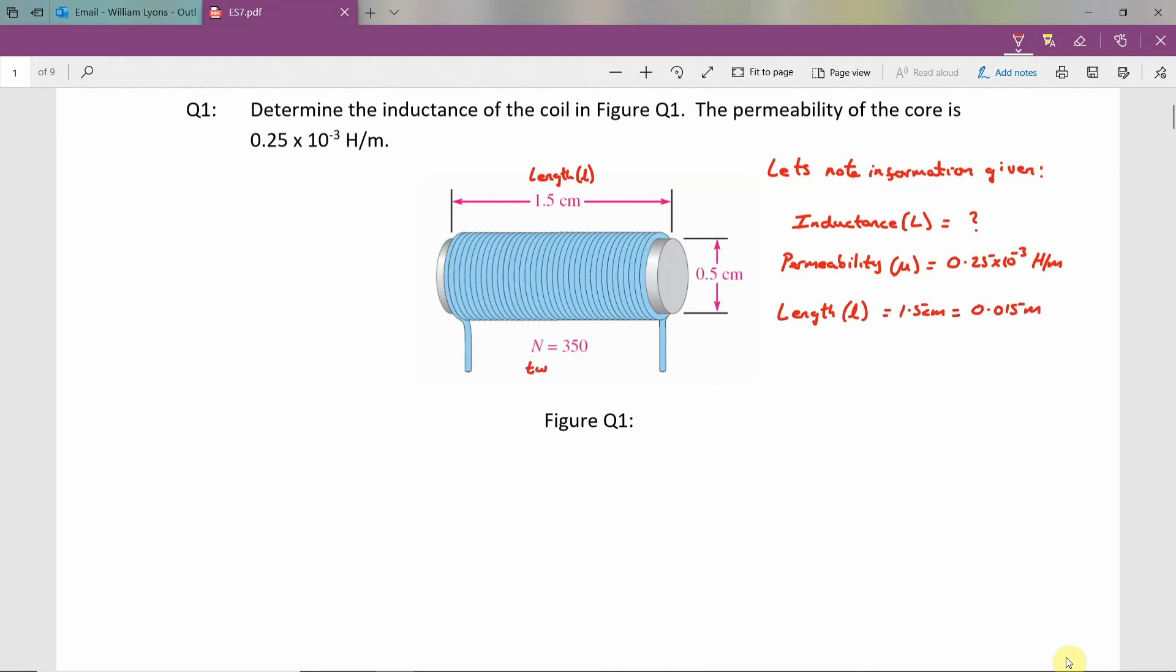We are shown here that the number of turns is equal to 350, so turns n is equal to 350.